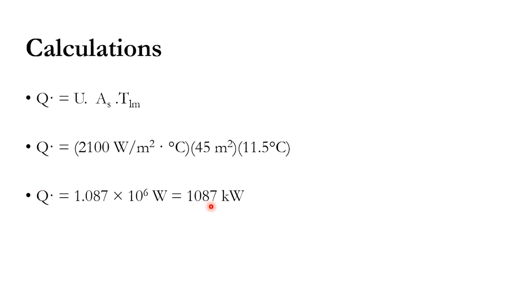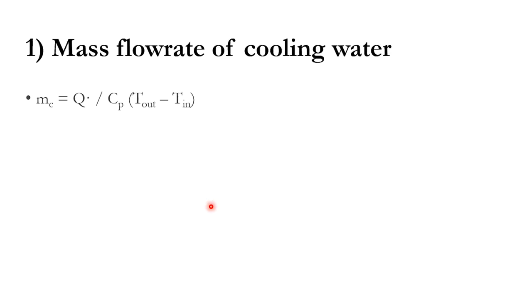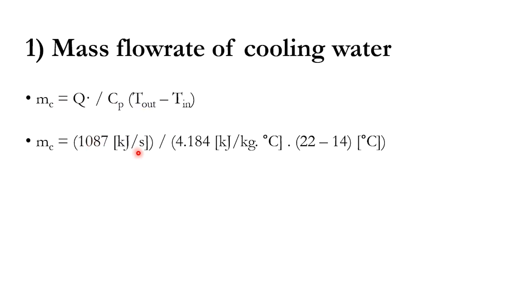To find the mass flow rate of cooling water, we use Q = m·Cp·ΔT, so m = Q / (Cp · ΔT) = 1087 kJ/s divided by 4.184 kJ/kg°C and (22 − 14)°C. The units cancel and we get 32.5 kg/s of cooling water required.